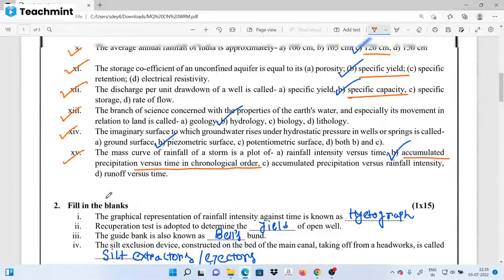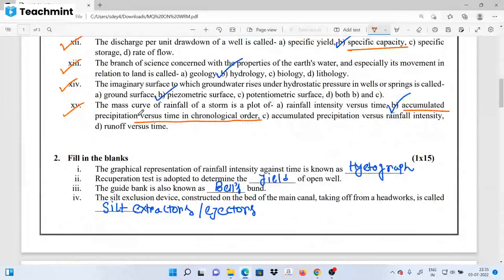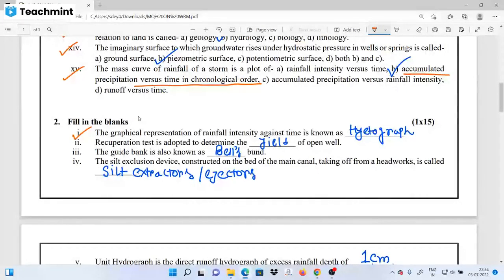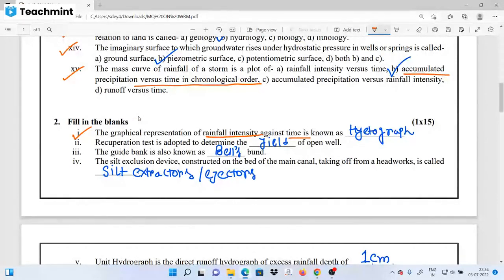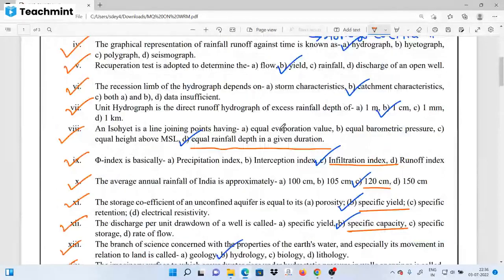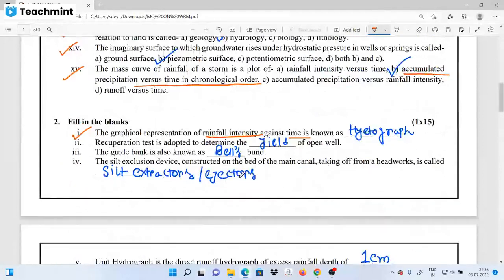Next, fill in the blanks section. Let's take a look at MCQ questions. First question: what is the graphical representation of rainfall intensity? So, rainfall intensity versus time is a hyetograph. As you can see, runoff versus time is a hydrograph. What about the recuperation test?